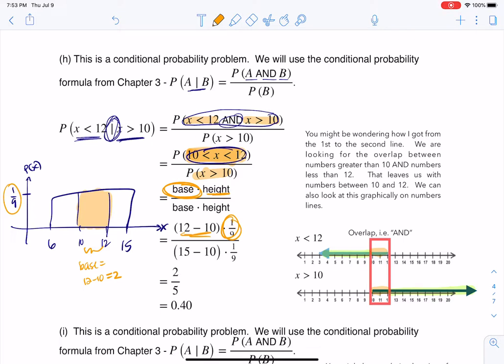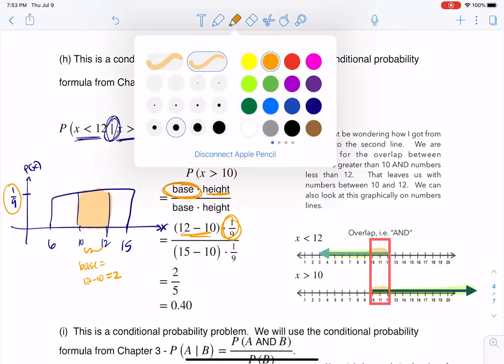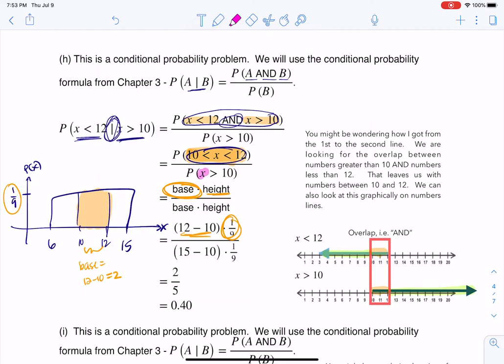Now for my denominator, let me change the color on this just so we can see it. If I want X's greater than 10, I'm going to start at 10 this time, but now I'm going to shade all the way up, so it's going to be this entire thing. And my new base that I'm worried about is going to be from 10 to 15, so the base there, when I want to find its numerical value, we go 15 minus 10, which is 5, and then the height again, 1 ninth. So these cancel out, that leaves me with 2 fifths, and that probability winds up being 40%, so that's how we do that one.